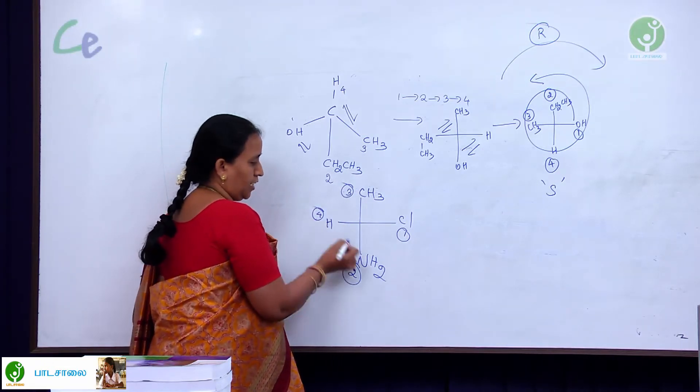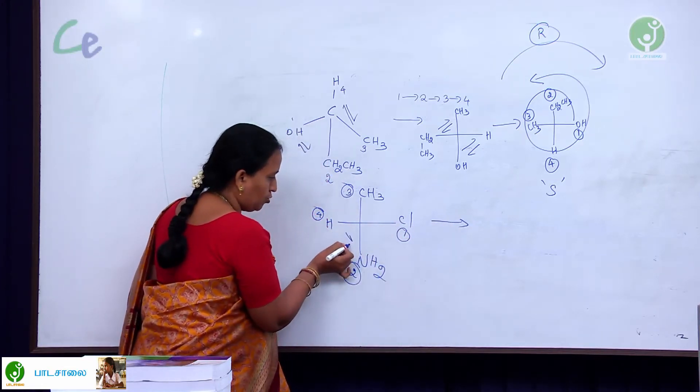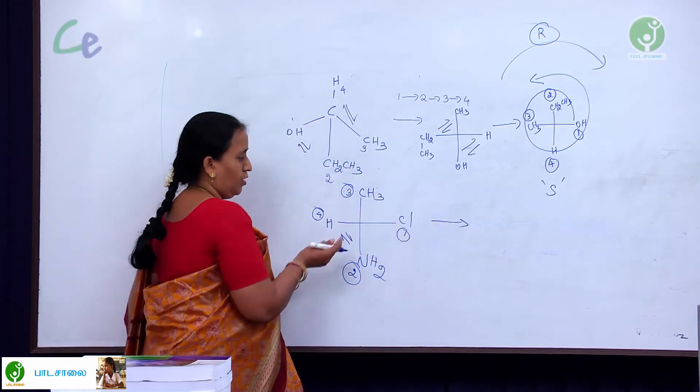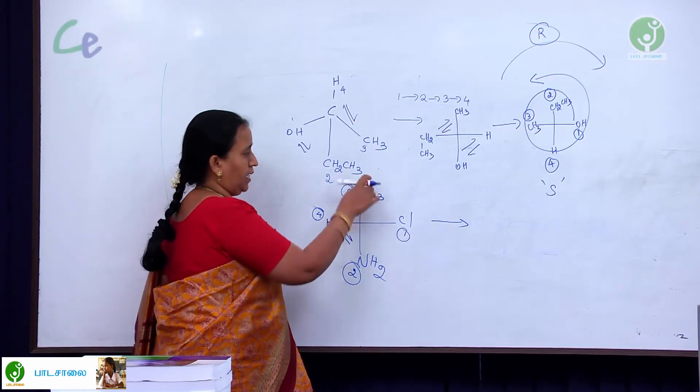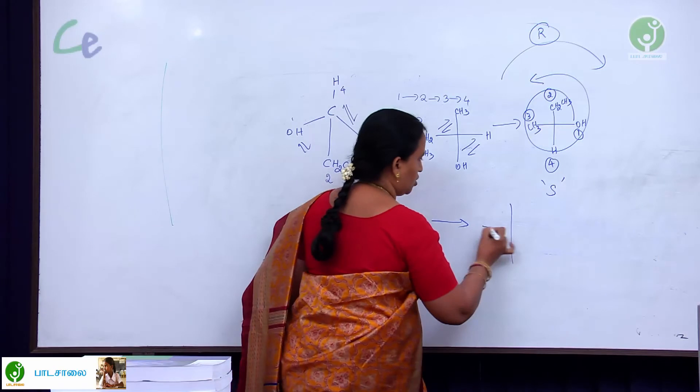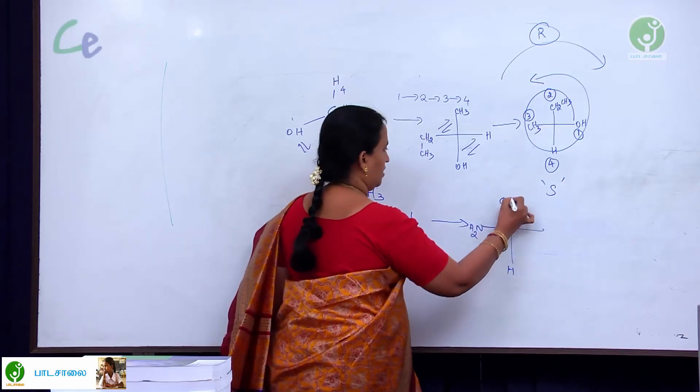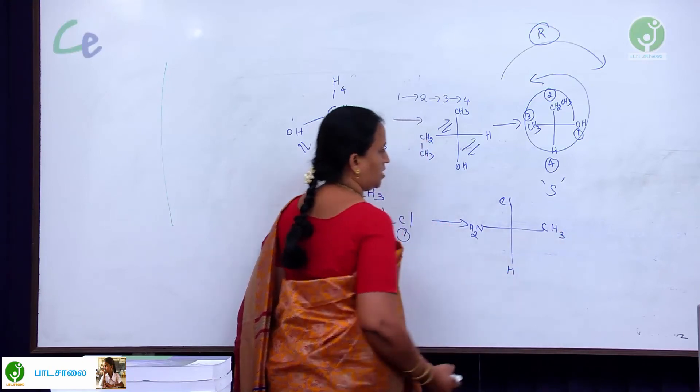Now, always the fourth atom should be at the bottom. So, how I am going to do? I am going to do the exchange between these two. When I am flipping this, automatically these two also or the opposite side also get flipped together. So, now, the hydrogen is here. NH2 is here. Chlorine is here. CH3 is here.